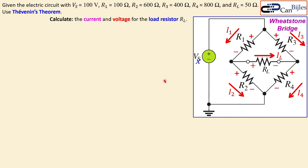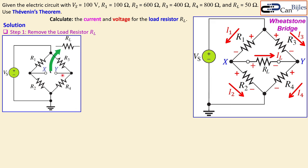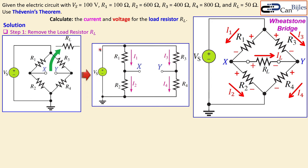For our analysis, it's handy to name the nodes — I'll call this one X and this one Y. Now let's look at our steps. Step one is to remove the load resistor, since that is where the information must come from. Remove RL and leave R1, R2, R3, R4, and voltage source VS in the circuit. You can redraw this for easier analysis. Now you can see directly two branches that are parallel: R1 and R2 are in series, and R3 and R4 are in series, and both branches are in parallel with VS.